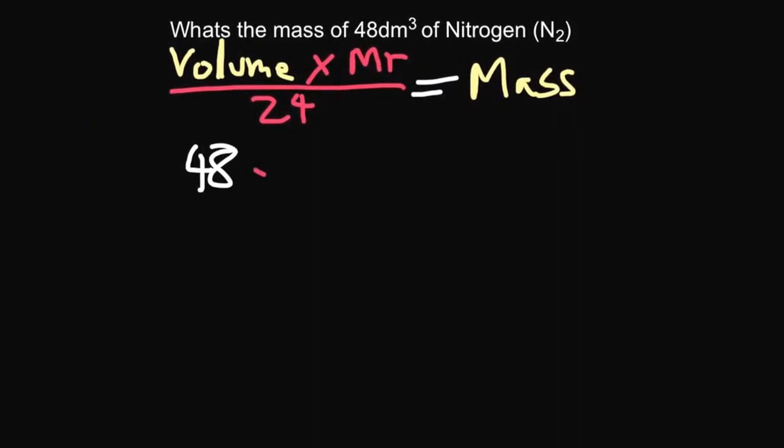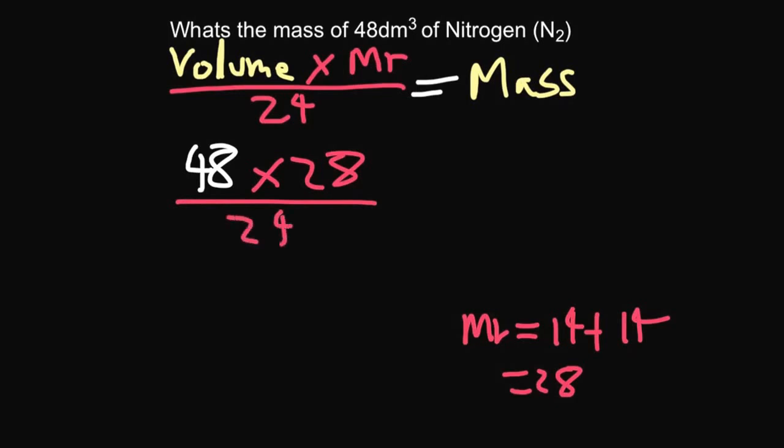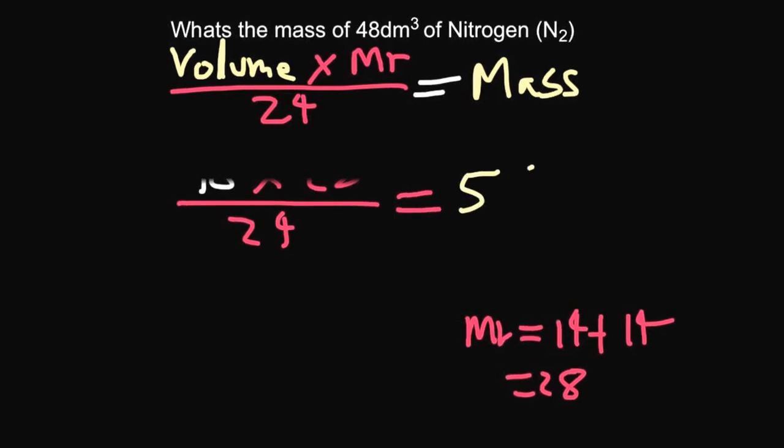We need to times that by the Mr. Well, if we look up the Mr for nitrogen, it's 14, but again, there's two of them. So that's 14 plus 14, so 28. So let's put that there, that's 28. We divide it by 24, and that will give us our mass in grams. So that comes out at 56 grams.